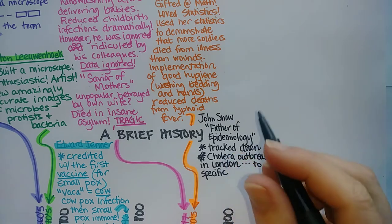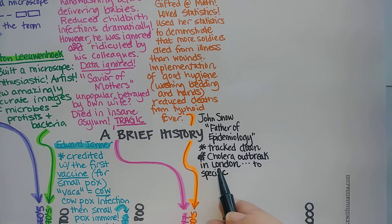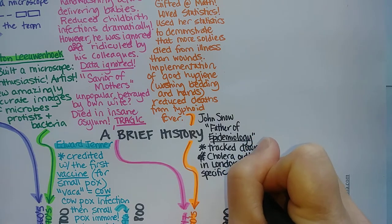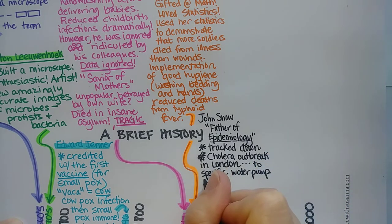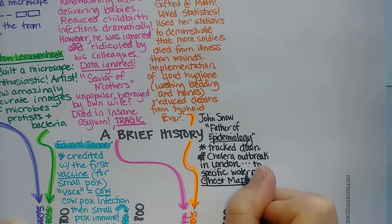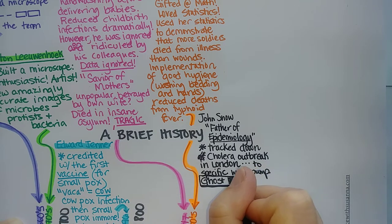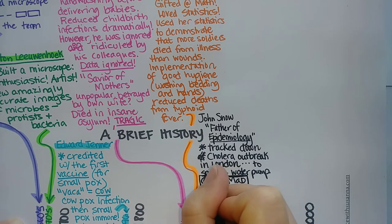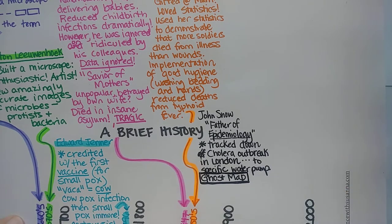He used a map of all the outbreak locations in London to track it down to a specific pump where people were getting sick. He conducted countless interviews all around the city and really turned epidemiology into a science. There's a book about this called The Ghost Map — I loved it and have recommended it to students over the years. Some students love it; others find it too detail-heavy, but I still recommend checking it out. You can find it on Amazon.